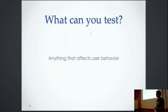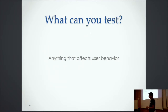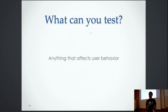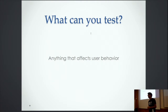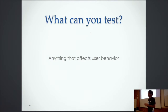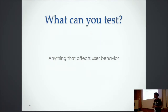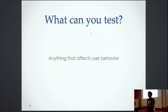What can you test on? You can test on anything that affects user behavior, which is basically everything your app is about. You can test on colors, buttons, sign-up pages, home pages, increase click-throughs, increase video watches — or anything your app is about. If you're doing a dating app: increase matches, increase messaging.